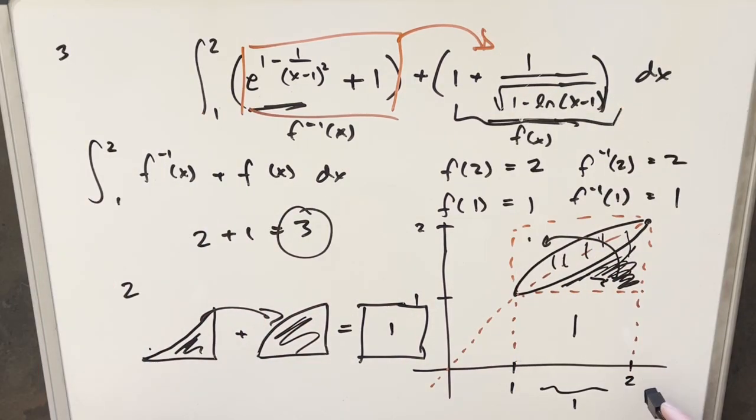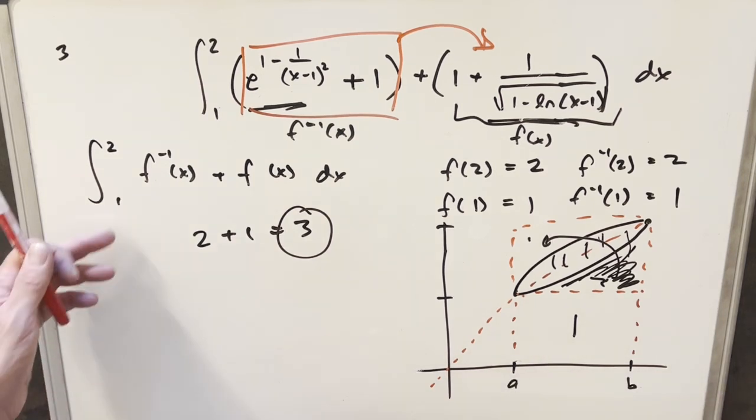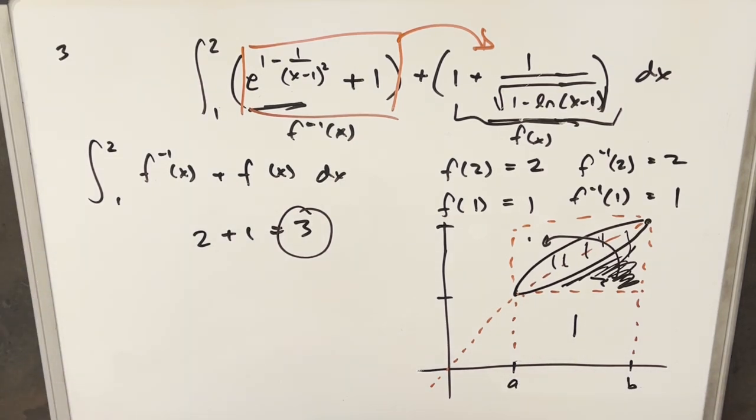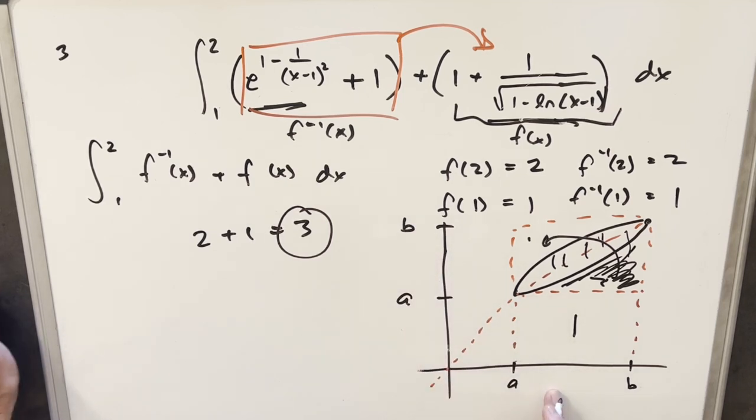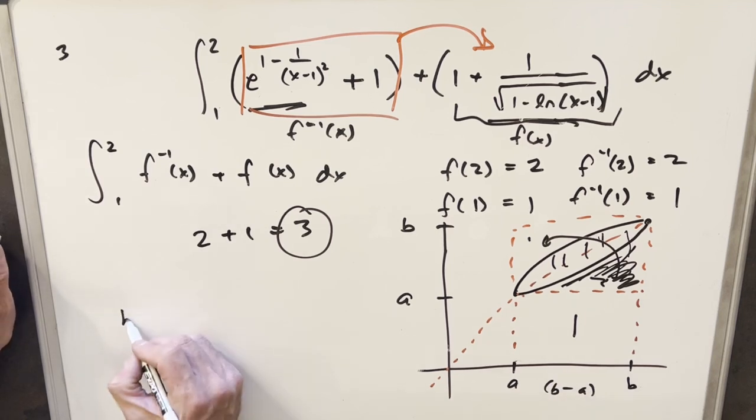And now the thing about this is this could actually be generalized. You could, instead of looking at this from 1 to 2, by making our bounds more general and just going from A to B, then we could right here, we could have this also going from A to B. And to calculate this area, it's just going to be this width here. But this width is just B minus A. So we'll have that.